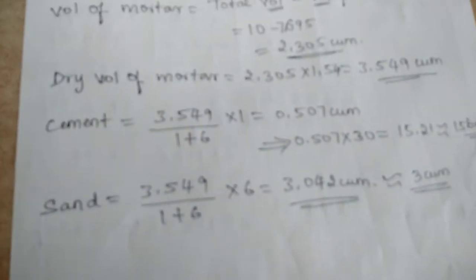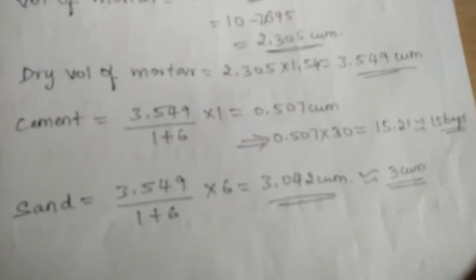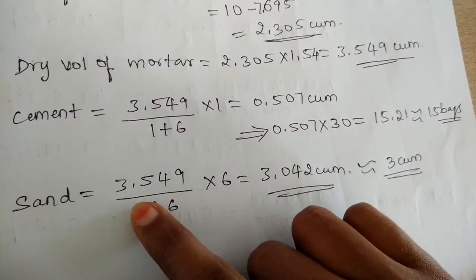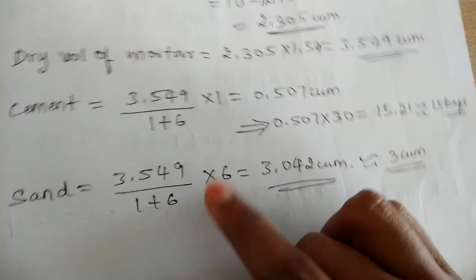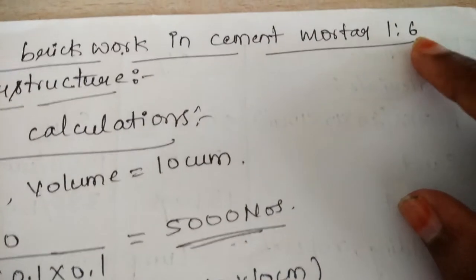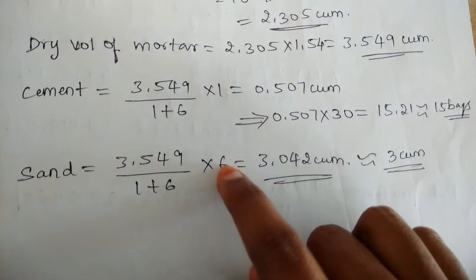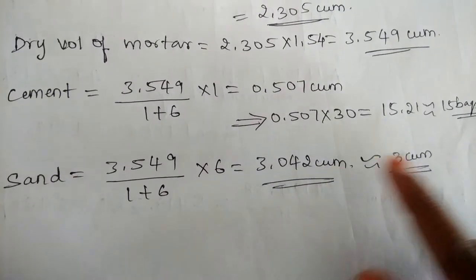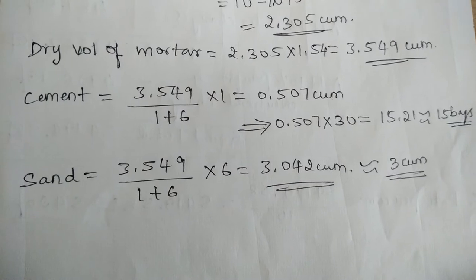Then let us find the quantity of sand. To find the quantity of sand, we take the dry volume of mortar — 3.549 — divided by the sum of the proportion, that is 1 plus 6, into the part of the sand which is 6. On simplifying, you get a value of 3.042 cubic meter, approximately 3 cubic meter. So this completes the material calculation.